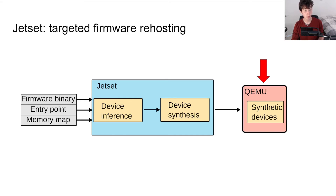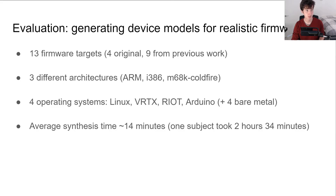To evaluate JetSet, we used it to model the peripherals of 13 pieces of firmware spanning three architectures, four operating systems, and multiple application domains. For example, we analyzed consumer electronics like the Raspberry Pi 2, a feeder protection relay used in the power grid called the SEL-751, and a CMU-900, a communications management unit used in the Boeing 737. On average, it took about 14 minutes to create peripheral models for each device. The SEL-751 took over two hours due to complicated arithmetic that tends to make SMT solvers quite unhappy. JetSet successfully generated peripheral models for all these devices.